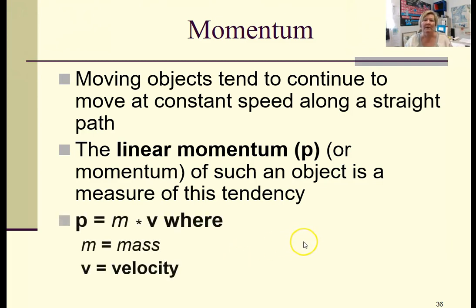Straightforward calculation: you take the mass of the object and multiply it by the velocity. So our units for mass are kilogram, velocity meter per second, so our units for momentum will be kilograms meter per second.